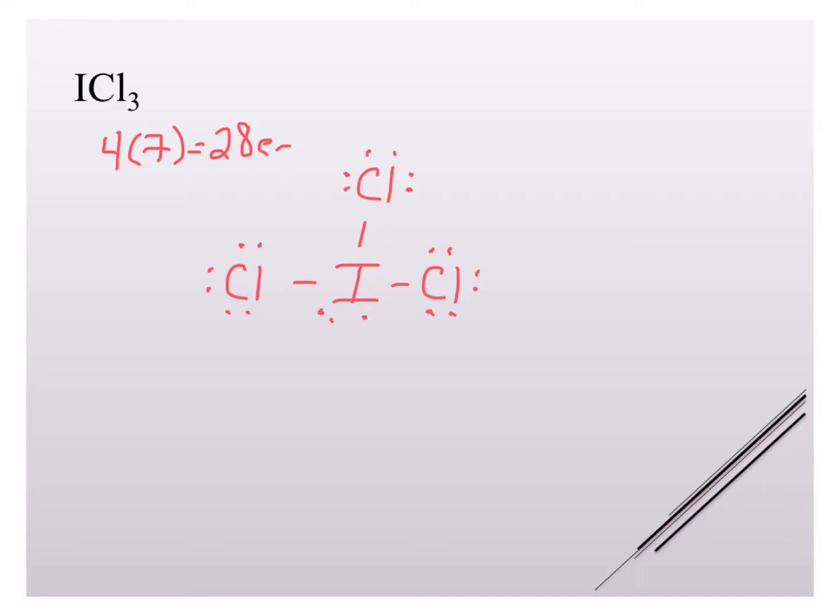And so I get four more electrons in the form of two pairs around that central atom iodine. So now I see I've used up my 28 electrons.